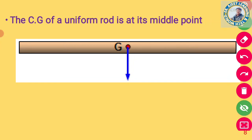अब देखते हैं center of gravity of a rod. एक uniform rod का center of gravity इसके middle point पे होता है — अगर rod uniform है तो उसका center of gravity बीच में होगा।